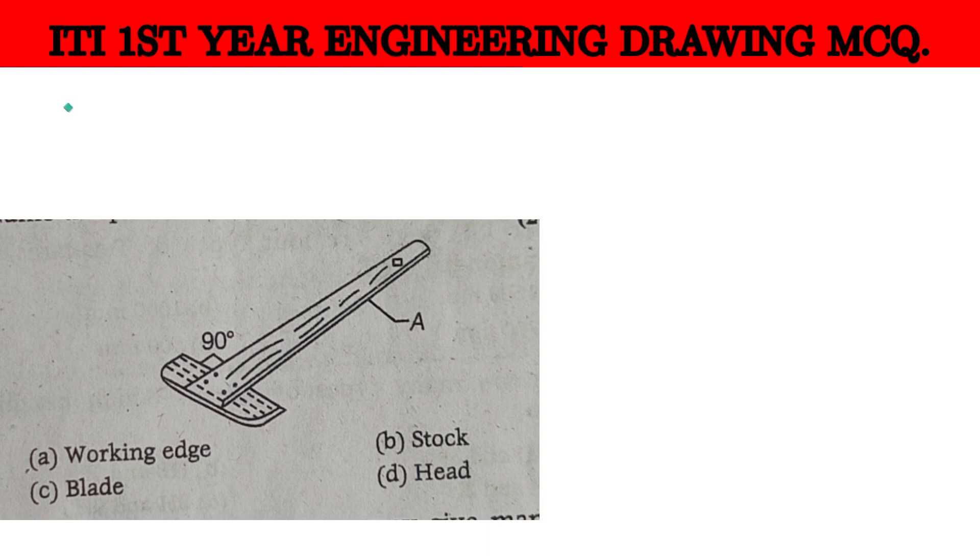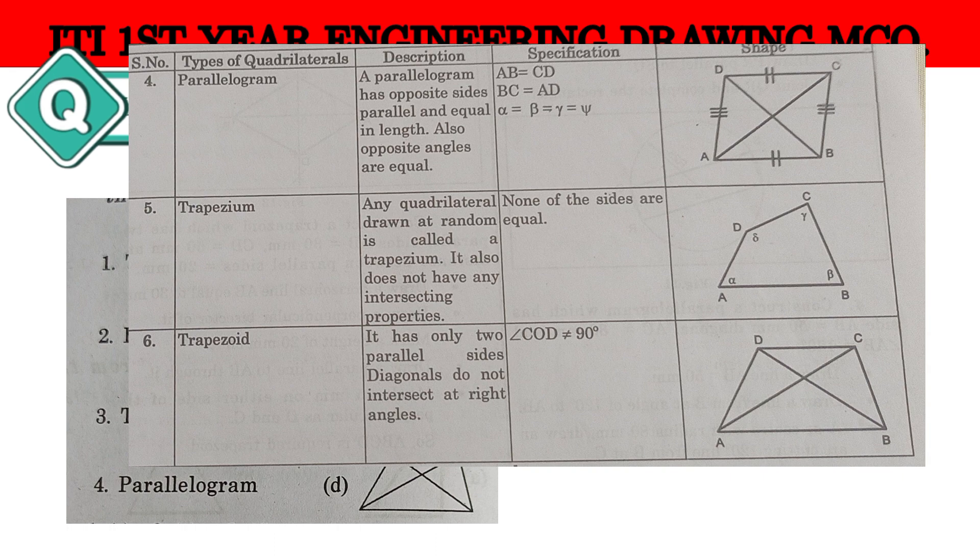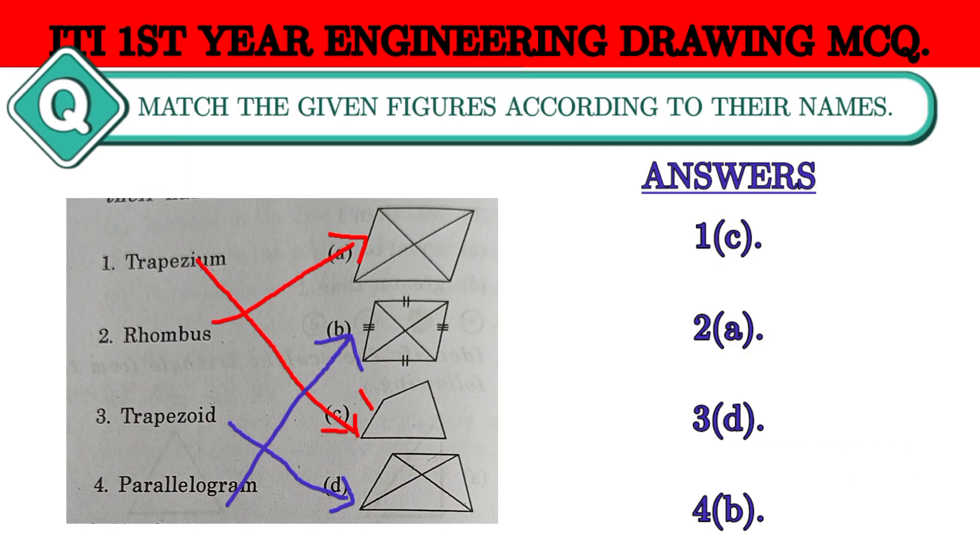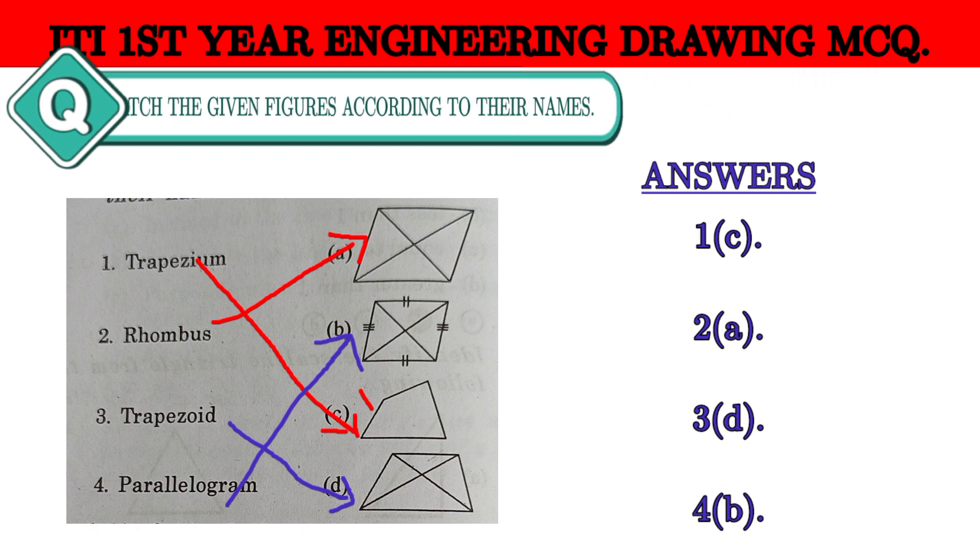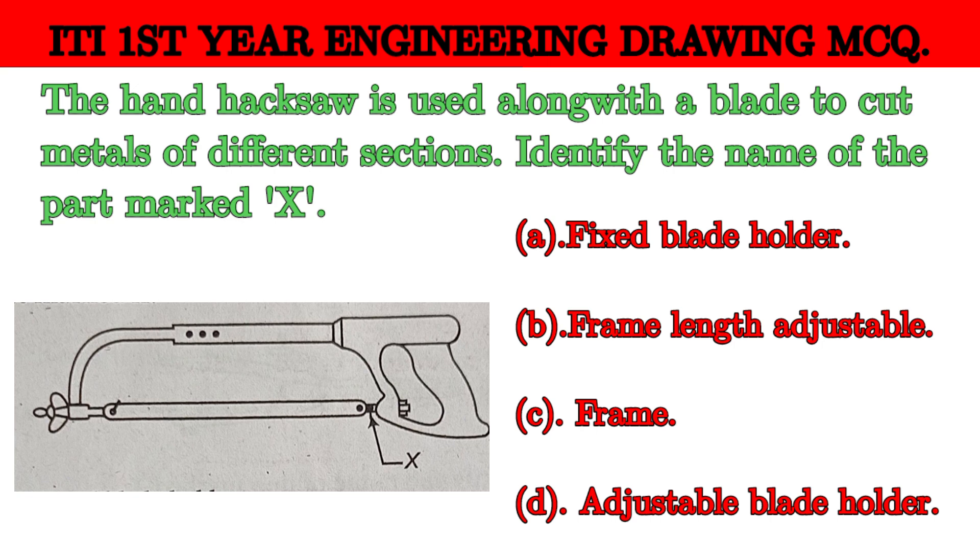Next question. We have different parts here with different colors. These are yellow markings. This is the extra key. The fixed blade holder is the fixed blade holder.